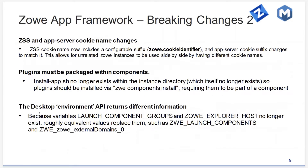The ZSS and app server cookies have had a name change. This shouldn't disrupt many people because most should be using the mediation layer SSO cookie. But the ZSS cookie now has a suffix so that you can tell two unrelated ZOE instances apart and use them both simultaneously. The app server is now using the same value, which is controllable by the configuration parameter ZOE.cookie.identifier.